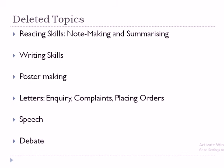Now let's come to the paper pattern. There will be two parts: Part A, which will be objective, and Part B, which will be subjective. Each will be for 40 marks. In Part A, there will be two unseen passages with multiple choice questions. From literature, there will be two extracts from stories from both books — Flamingo and Vistas.